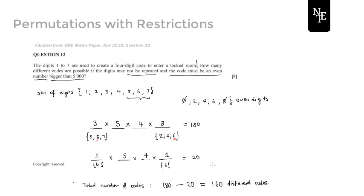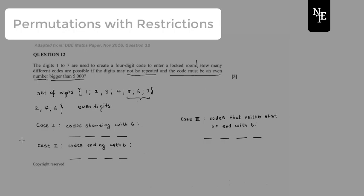That's going to give you 160 different codes. So that's one way to think about the situation. Another way is to break it up into a series of cases, so let's look at that.